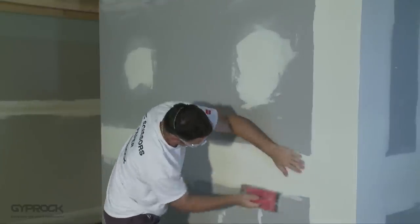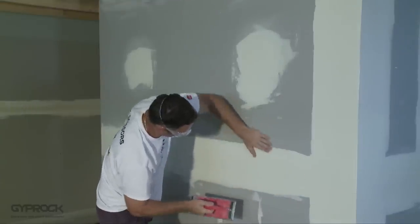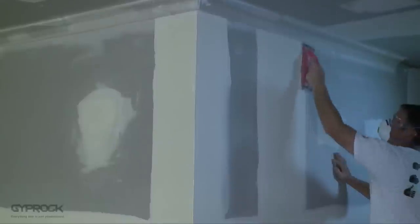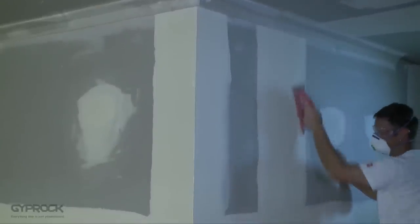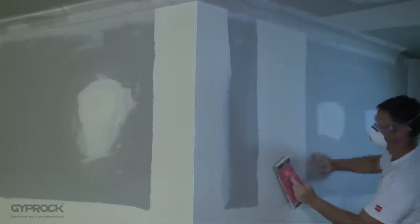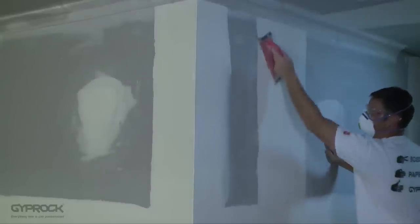After sanding, run your hand over each joint to check for any imperfections. The process is pretty much the same for butt joints and corners, starting at the edges of the compound and working towards the middle of the joint.